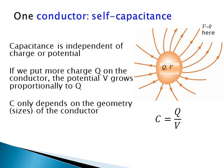It turns out that, although we formally write C equals Q over V, capacitance does not depend on either Q or V. If we put more charge Q on the conductor, the potential V on the conductor grows proportionally to Q. When we take the ratio, the dependence on Q cancels in the numerator and denominator.